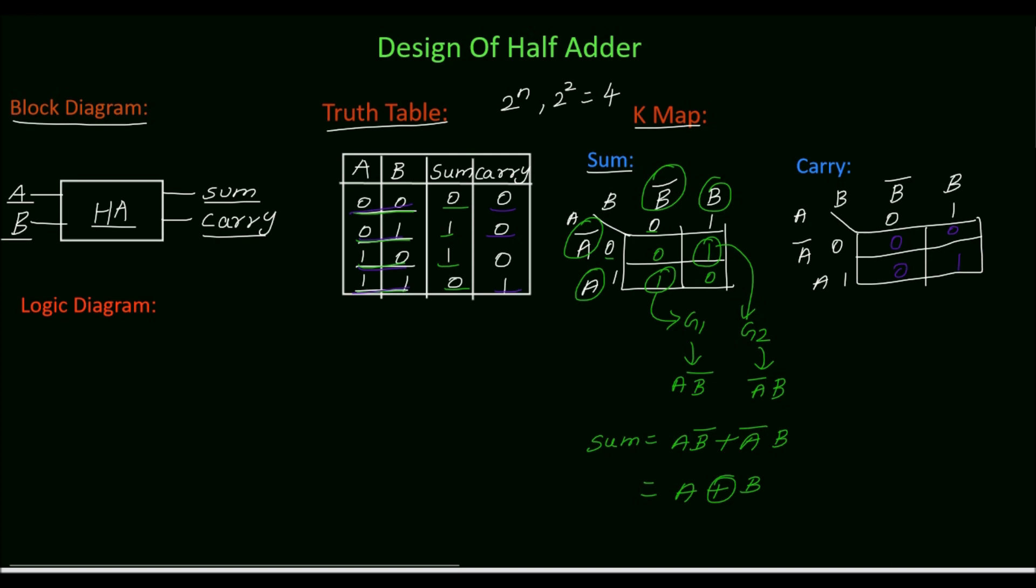Now we will group the cells. Here we have isolated 1. Mark this as group 1. The remaining cells are 0 so we can leave this.